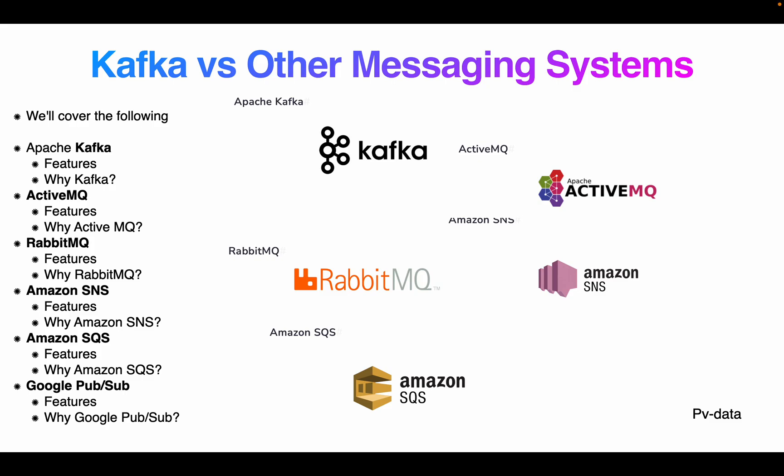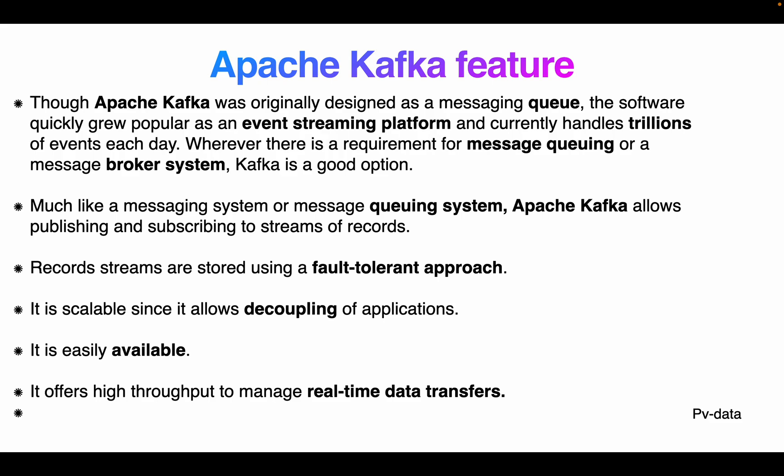We are going to cover Apache Kafka, ActiveMQ, RabbitMQ, Amazon SNS, Amazon SQS, and Google Pub/Sub. In Apache Kafka we are going to cover what its features are and why Kafka is needed, then ActiveMQ features and why it's needed, RabbitMQ features, Amazon SNS, Amazon SQS, Google Pub/Sub and its features.